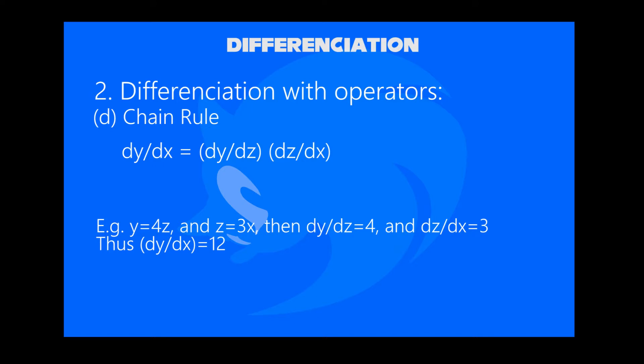For example, if y = 4z and z = 3x, then differentiating y with respect to z gives dy/dz = 4. Differentiating z with respect to x gives dz/dx = 3. Thus dy/dx = 12.